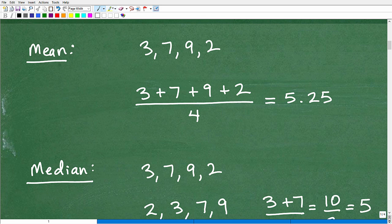Now let's get into the mechanics. Here are our numbers: 3, 7, 9, and 2. We'll start with the mean. The mean is the average. What do we do when we calculate the average or mean? We add up the numbers: 3 plus 7 plus 9 plus 2. How many numbers do we have? 1, 2, 3, 4. So we divide by the amount of numbers we have. 3 plus 7 plus 9 plus 2 is 21. We divide that by 4, we get 5.25. That is the mean. So that's one measure of central tendency - 5.25 is the average or the mean of this data set.